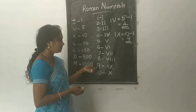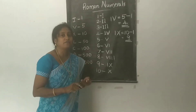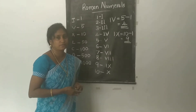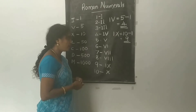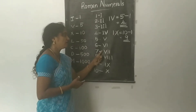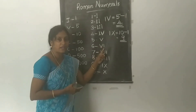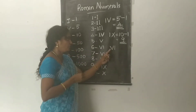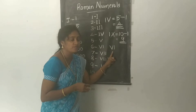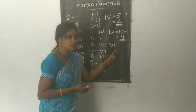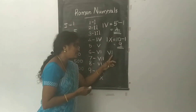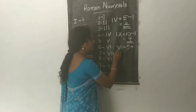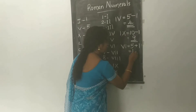The fourth rule: if a symbol of smaller value is written on the right-hand side of a symbol of greater value, its value is added to the greatest value. For example, VI — V stands for 5 and I stands for 1. Since I is on the right side, we add: 5 plus 1 equals 6.